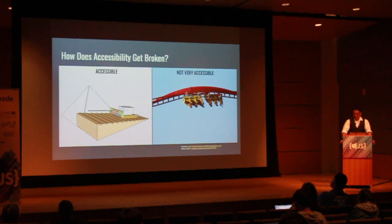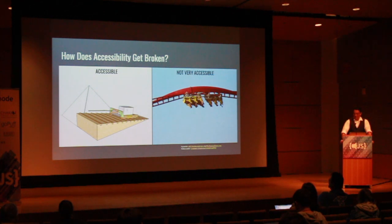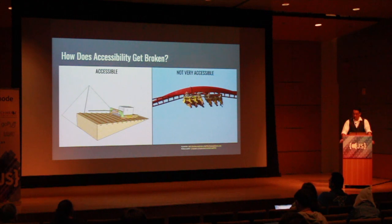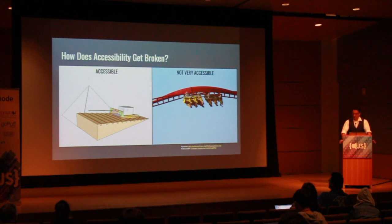Properly written semantic HTML — the building blocks of a webpage — all by itself is 99% accessible when used properly. By adding visual and interactive changes to standard HTML, something even as simple as changing an element's color can break the webpage accessibility for some users.